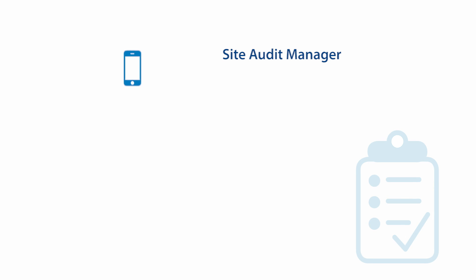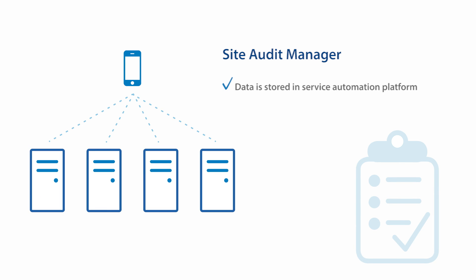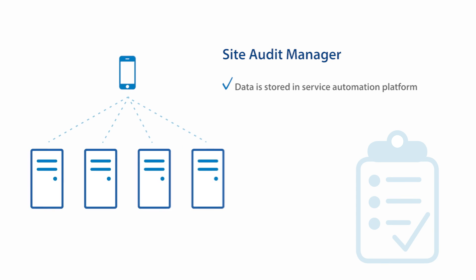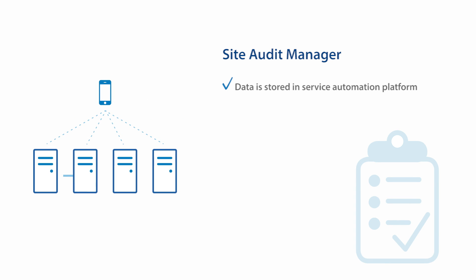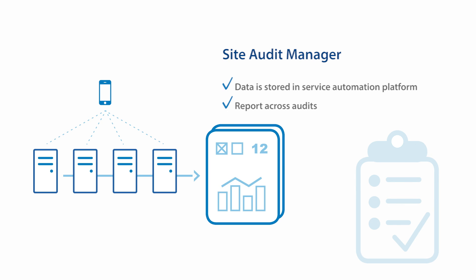When your audit is complete, you send the results to our servers, where your data is stored and centralized in the service automation platform. You can later report across your audits — for example, you can look for how many bathroom failures have occurred in the Northeast region over the past three months.